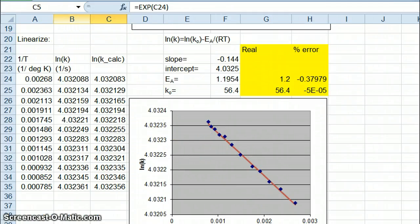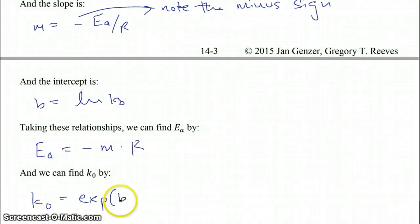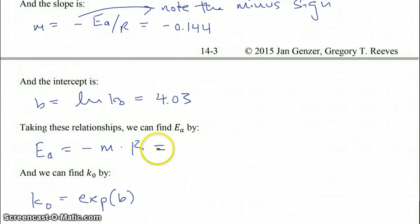To summarize part (a): E_a = −slope × R, and k₀ = EXP(intercept b). From our Excel file, slope = −0.144 and intercept = 4.03, therefore E_a = 1.20 and k₀ = 56.4, which matches exactly the values used to generate the data.